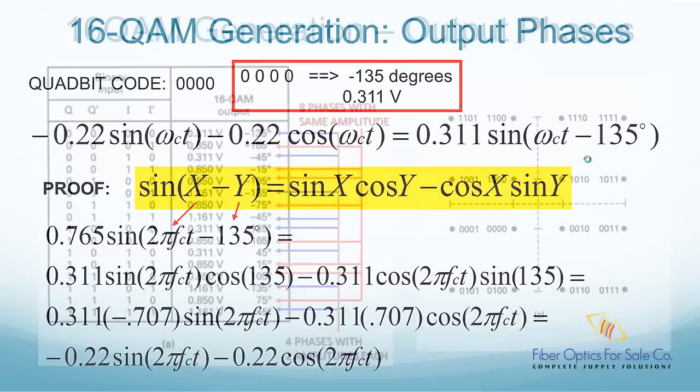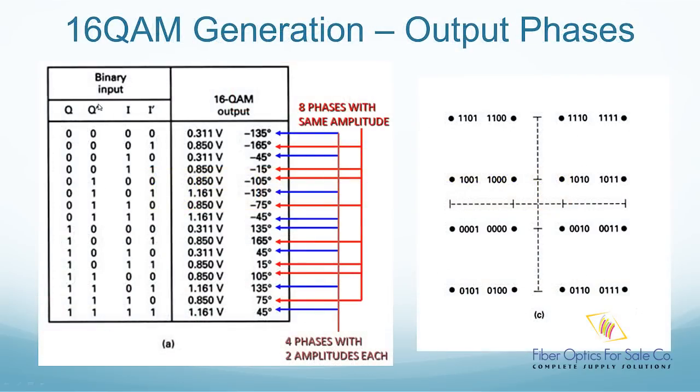This list shows the 16 QAM modulation output with different amplitude and phase change for all 16 quad bits. On the right side is the constellation diagram, which shows the positions of these quad bits on the IQ diagram.